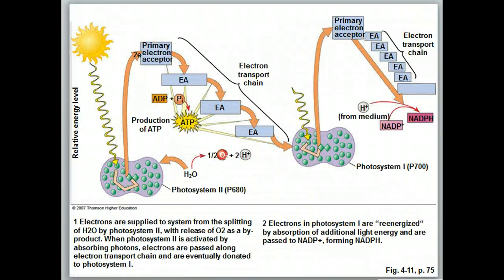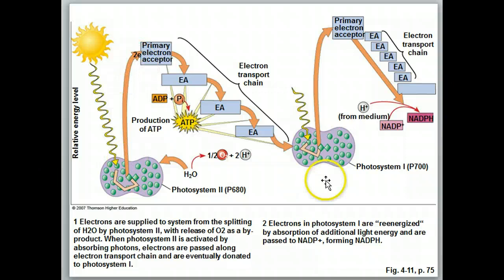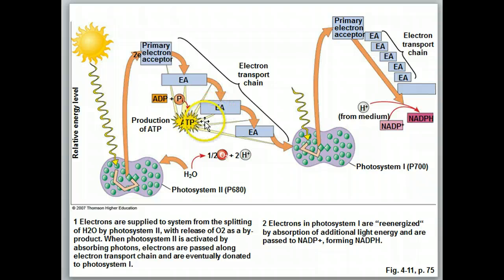Here is a more detailed version of the light-dependent reaction. You have two photosystems — groups of pigments embedded in the thylakoid membranes — that absorb the light energy. That energy is transferred to a couple of electrons in the reaction center. Those electrons are boosted out of their orbits and picked up by an electron acceptor, both from photosystem II and from photosystem I. From that electron acceptor, these electrons are passed down an electron transport chain, just like we had in respiration. As the electrons pass along that chain, they drive the process of chemiosmosis and produce ATP.